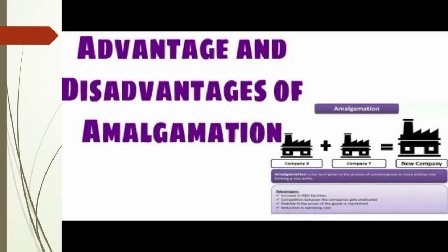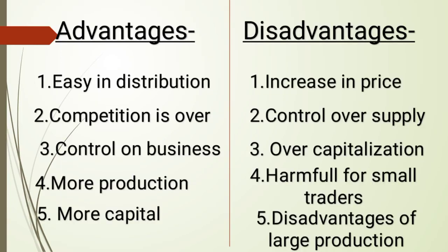Now, what are the advantages and disadvantages of amalgamation? Advantages include: ease in distribution, elimination of competition, more control on the business, increased production, and more capital formation. On the other hand, a disadvantage is an increase in prices, because the combined entity becomes a monopoly and can charge whatever price it wants.